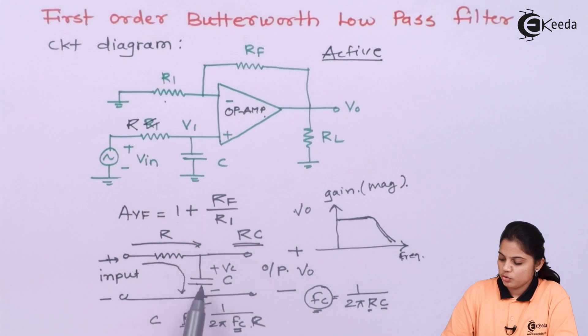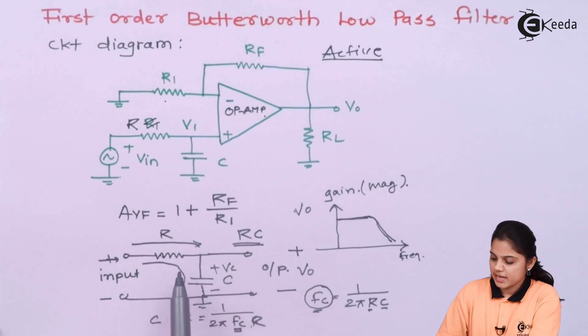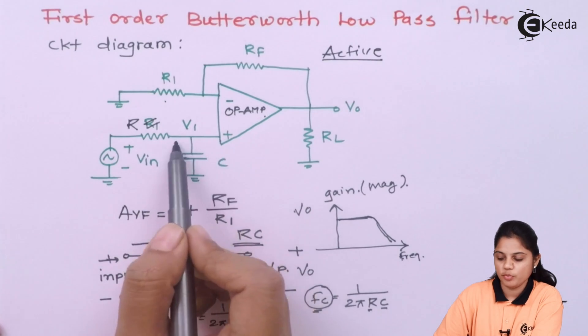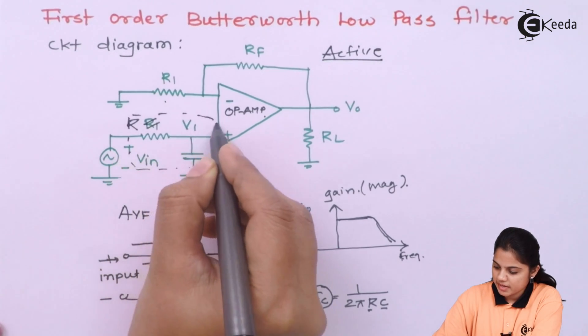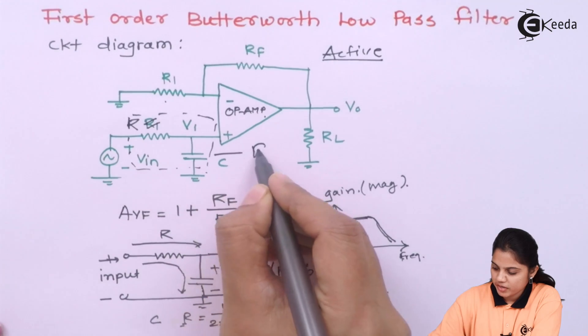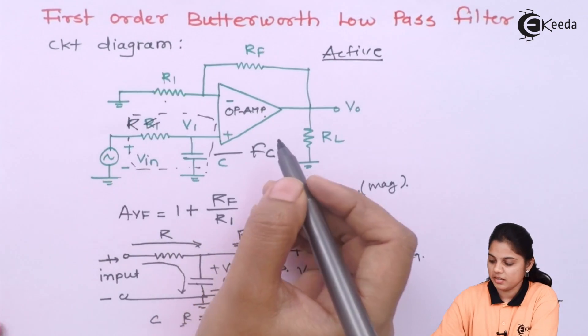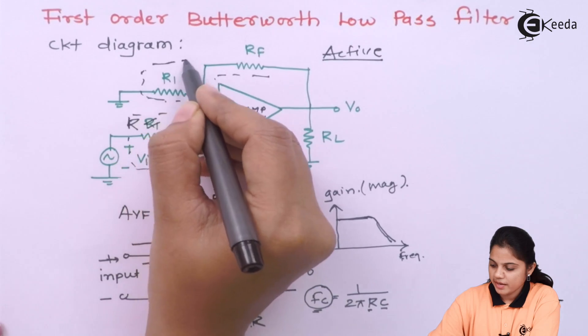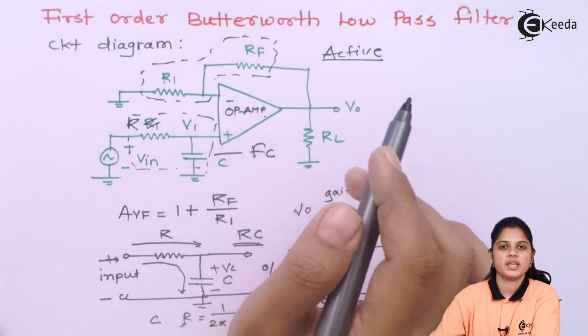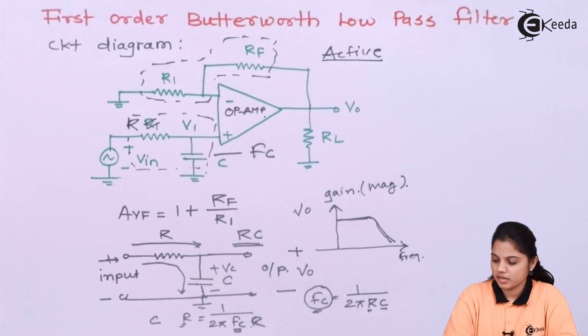So these components are used for a low pass filtering. Since I have connected this resistance and capacitor for the input, this particular part that is R and C will decide the cutoff frequency of the filter and these two resistance parts will decide the gain of operational amplifier or for the gain of this particular circuit.